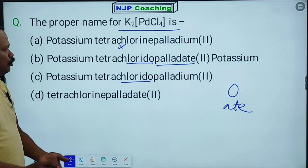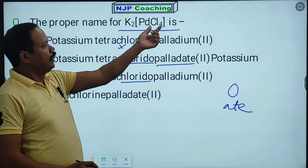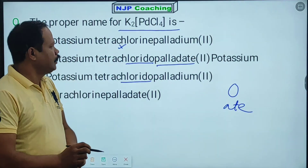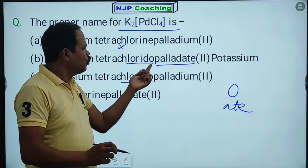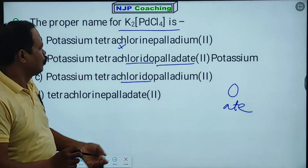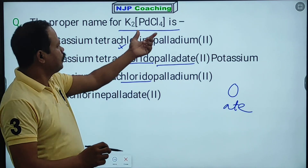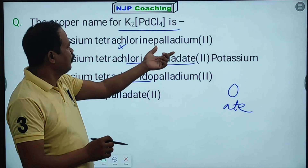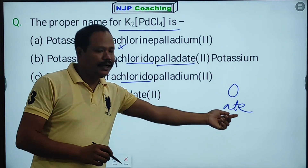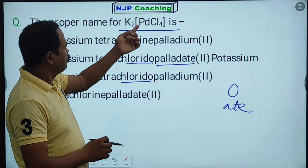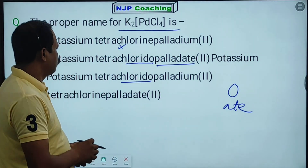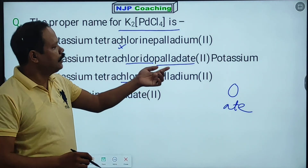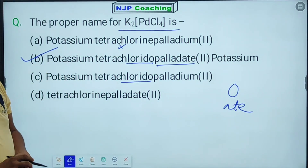So for K2PdCl4: K+ is potassium, the anionic ligand Cl- is called chlorido, and the metal Pd in an anionic complex is called palladate. There are four chlorido ligands, so the full name is potassium tetrachloridopalladate. Option B is correct.